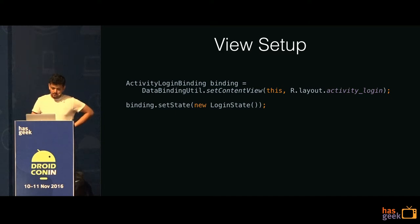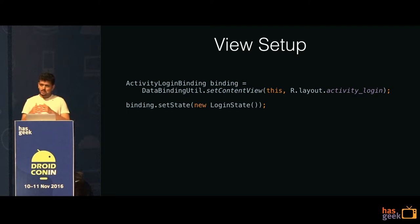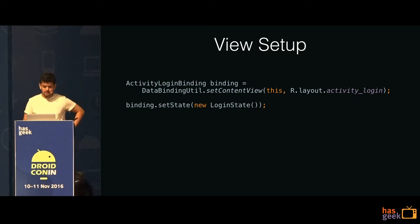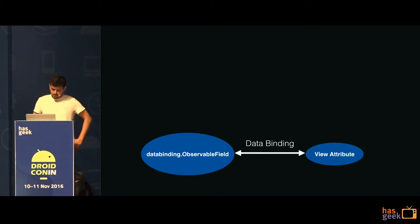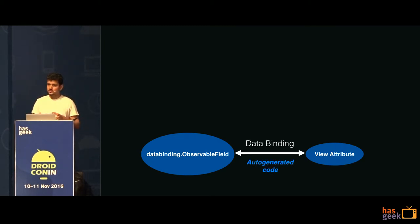For activity_login.xml, it will create a class named ActivityLoginBinding. Since my XML declares a variable named state, it has a corresponding setter setState which I can use to populate that variable. This setState method will internally set up the listeners to keep your ObservableField and view attributes in sync. In order to set up my view, I need to create an instance of this binding — creating an instance is very similar to how we inflate a view. Data binding provides similar utility methods which return an instance of binding instead of a view, and then this binding object has these setters you can use to pass in the state objects.